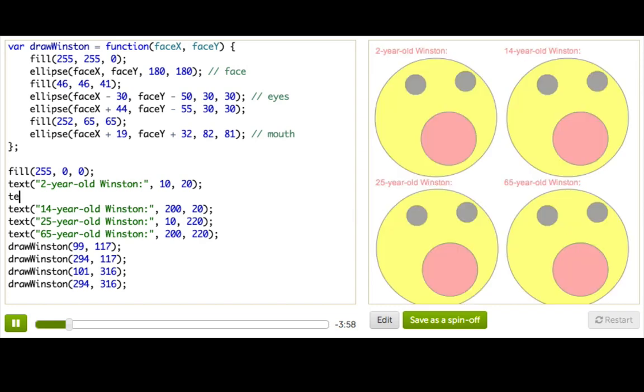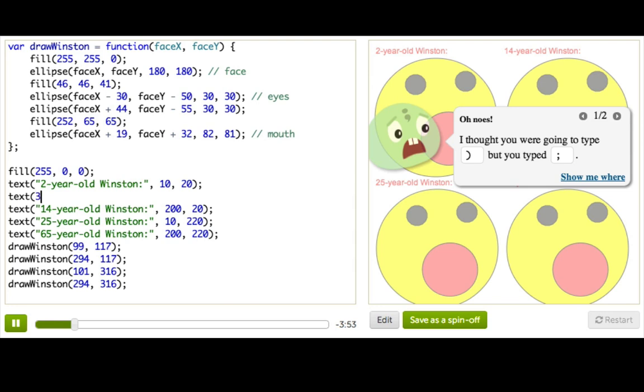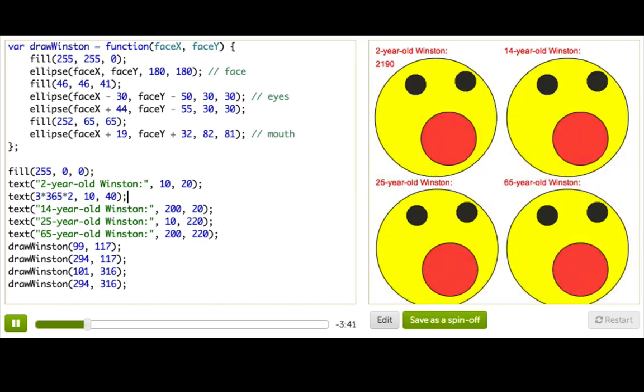For example, when he's two years old, that means he's eaten three times 365 times two. So three in a day times 365 days times two years. And we'll just display that underneath that header. So wow, 2,000 donuts. That is a lot of donuts for a two-year-old.